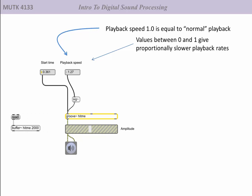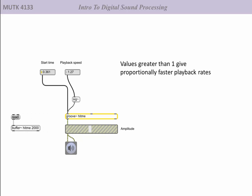Similarly, if we go above 1, we get faster speeds. A value of 2.0 would play back the file twice as fast. So in this example, with a buffer that has a length of 2000 milliseconds, if we play it back at twice the speed, it's only going to last 1000 milliseconds.